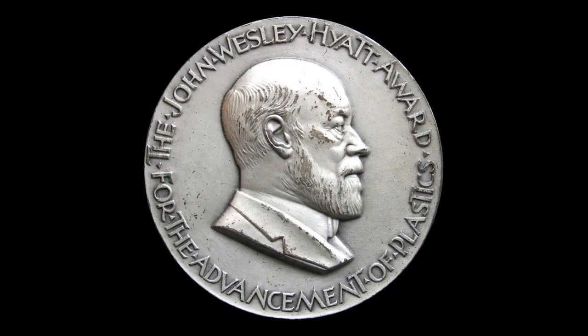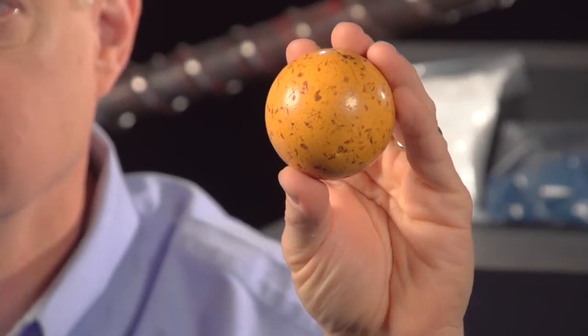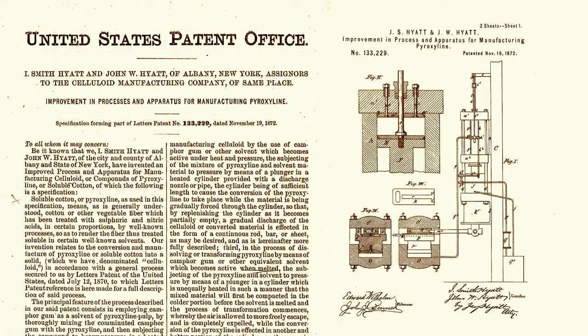This spurred John Wesley Hyatt to develop one of the first plastics, celluloid, to create billiard balls. He patented an apparatus for molding products from celluloid. This apparatus was the birth of plastic injection molding.